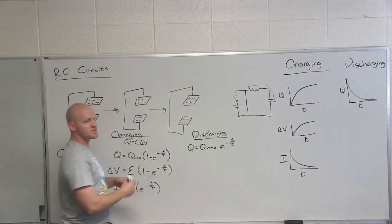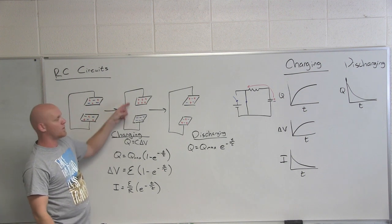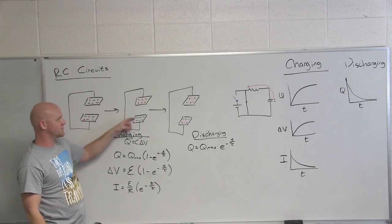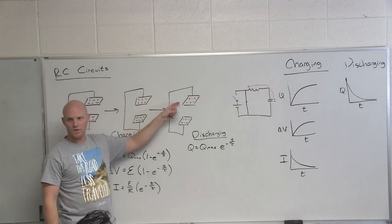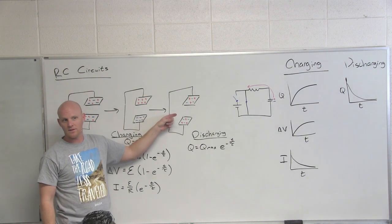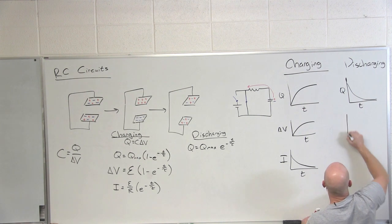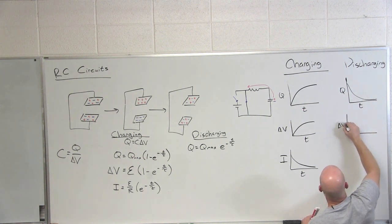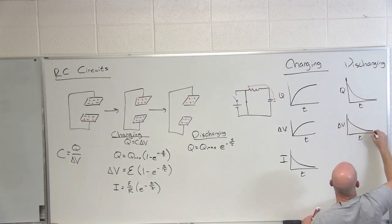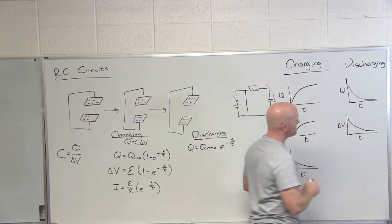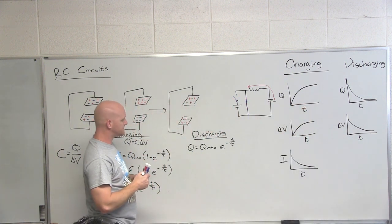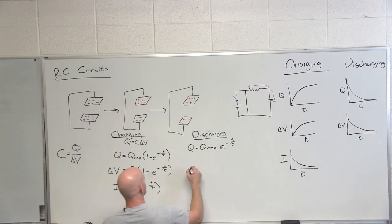And again here we're starting at a state when it's charged where we have a maximum difference in potential between the plates to a place where how much potential is across the plates? Zero difference. And so in this case our v is going to look the same way. Again starts out at its maximum and decreases down to zero. Same kind of exponential decay equation.